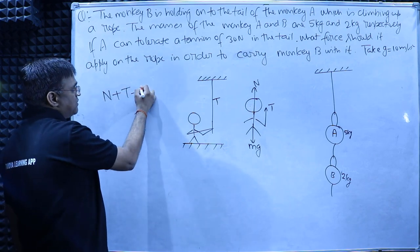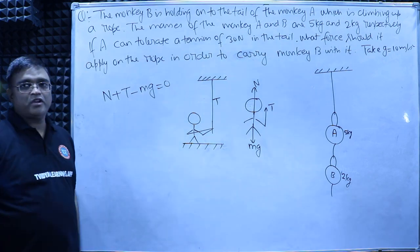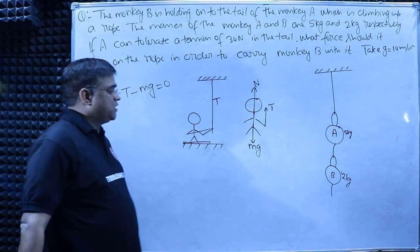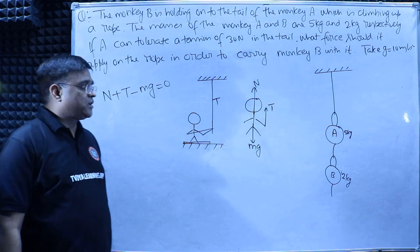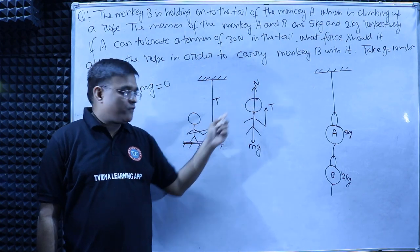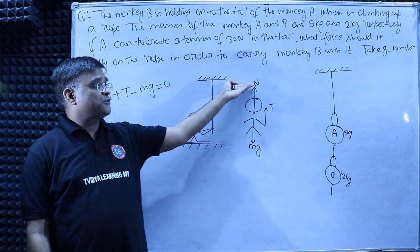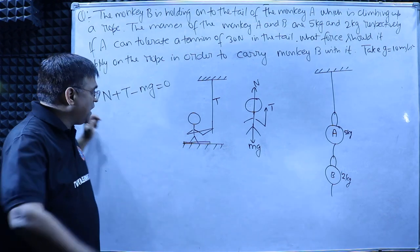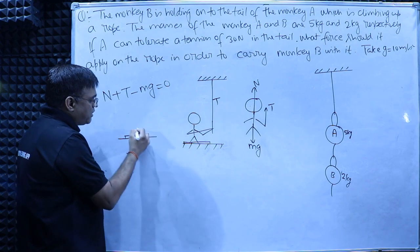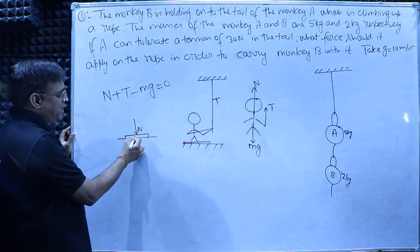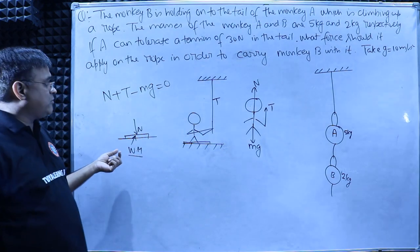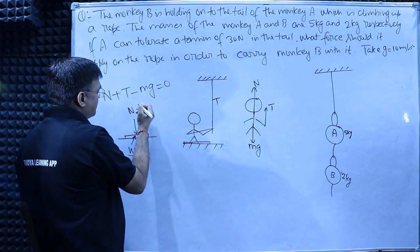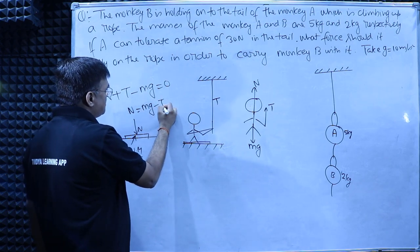Since you are in equilibrium, the net force acting on you is zero, so N plus T minus Mg equals zero. If you have a weighing machine under your feet, it will read N. As per Newton's third law, you exert N force downward on the weighing machine, so it reads N.